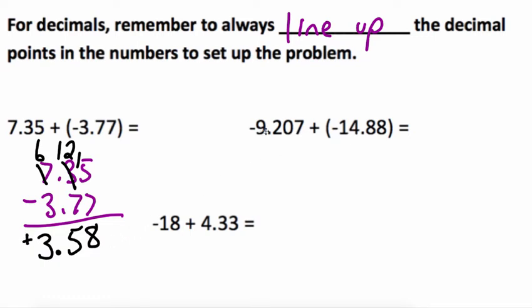Over here, negative 9 and 207 thousandths plus negative 14 and 88 hundredths. They have the same signs so we're just going to add them together. Remember when you add them together you have to line up your decimal points. So in this case I have to add an extra 0 at the end.